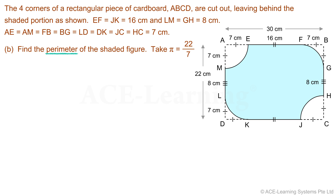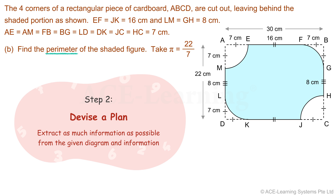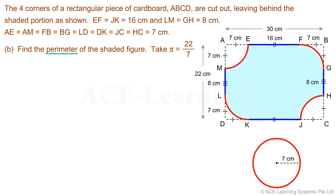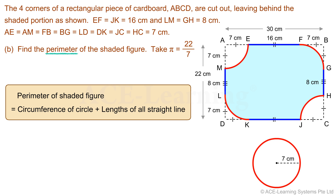Let us now look at the next step to find the perimeter of the shaded figure. The perimeter of the shaded figure is the total length of all the straight lines and the curved length of the equal quadrants at the four corners of the figure. What shape do we get when we put the curved lengths of the quadrants at the four corners together? We get a full circle of radius 7 centimeters. So to find the perimeter, we can take the circumference of a circle with radius 7 cm plus the length of the straight lines on the outline of the figure.